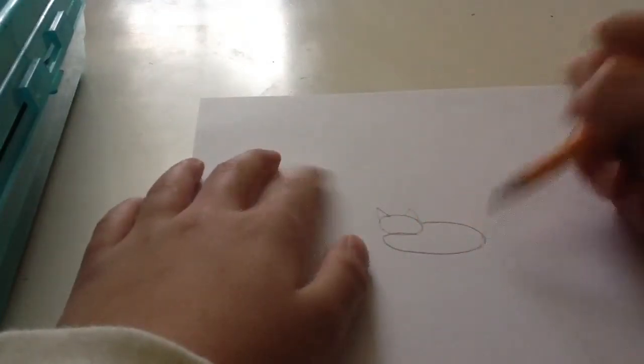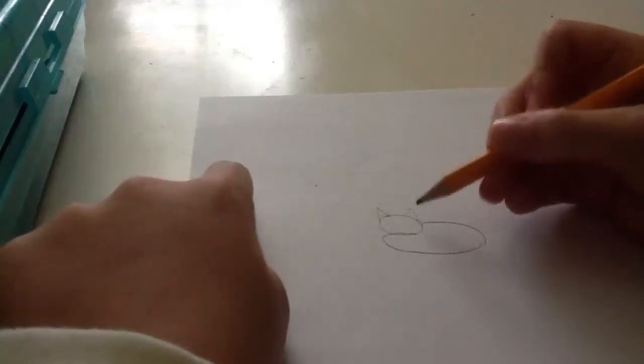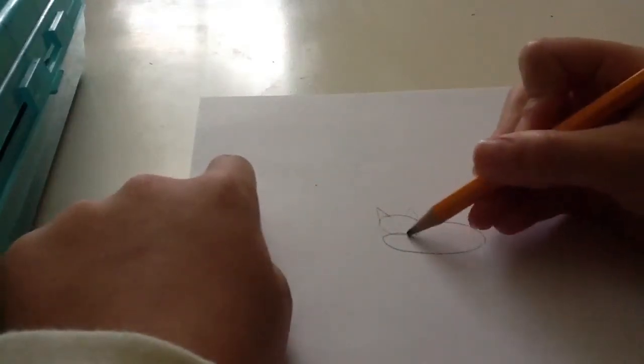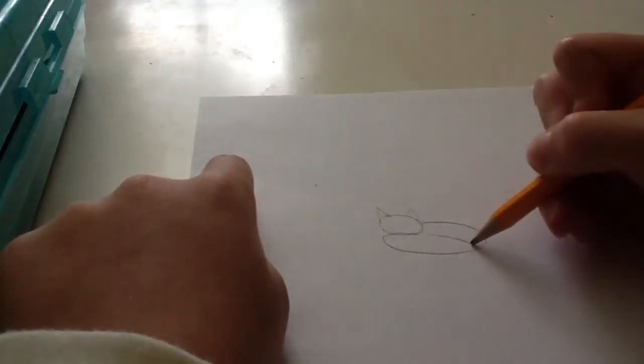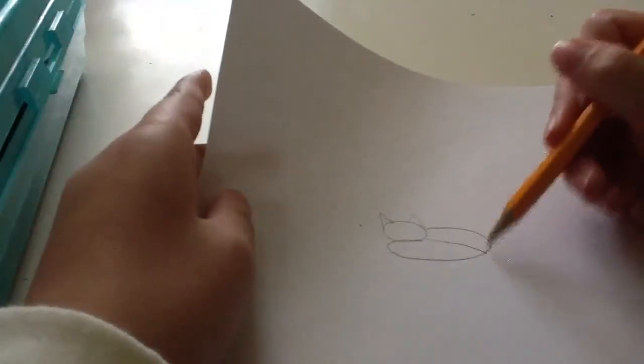We're going to do that and you might say, what are we doing? We're just making it all oval, but we're actually sticking the tail in there.